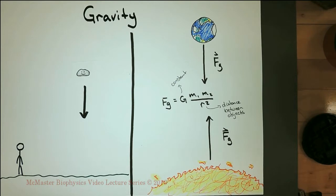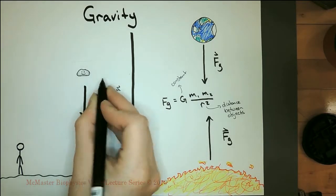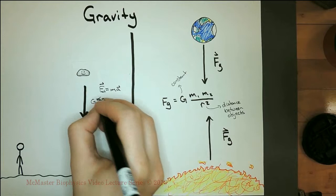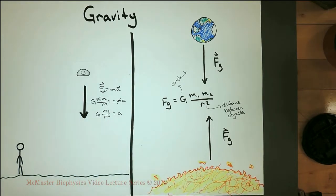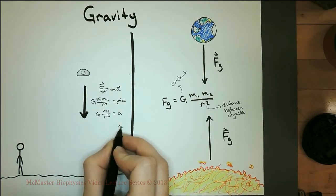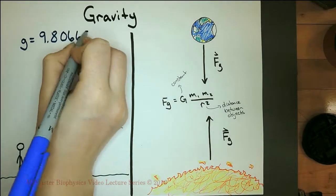Why is this? Newton's second law states that the net force on an object equals its mass times its acceleration. If gravity is the only force acting on the object, then the force of gravity equals the net force. The mass of the object cancels on both sides of the equation. The constant G and the mass of the Earth are both constant, and the change in distance between the two objects is negligible when working with objects on the Earth's surface. So the acceleration at the Earth's surface is a constant. We call this little g, the acceleration due to gravity, equal to 9.80665 meters per second squared.